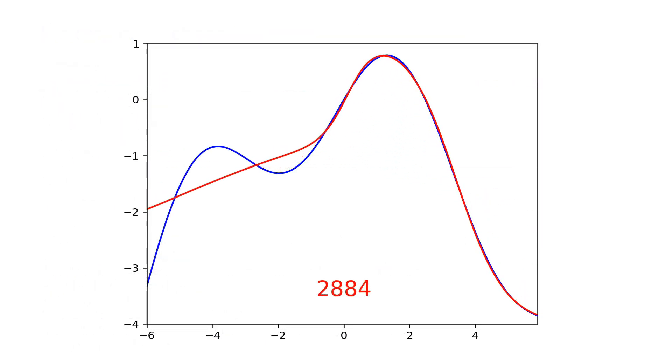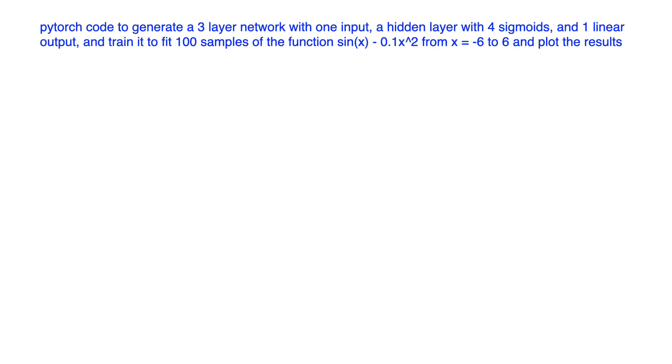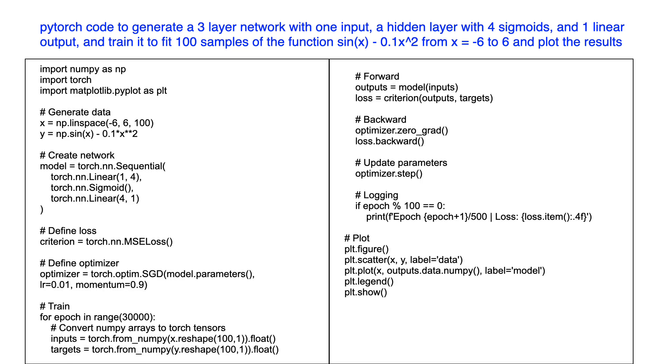And remember this neural network that we trained? Well, GPT-3 wrote the code. I just described the network I wanted and the function I wanted to fit in English. And GPT-3 generated the program automatically. The first few times I ran it through GPT-3, the code had one bug, but the third time produced Python code that ran perfectly. Mind-blowing.